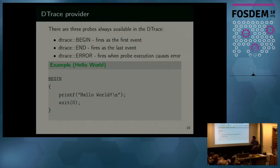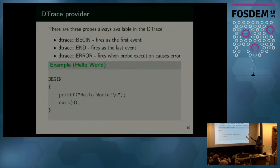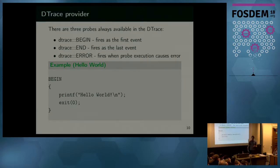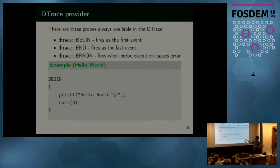Now basically we've gone through the language description. If you try any new language the goal is to write a hello world. This is a hello world in D-trace. I'm using a D-trace provider — the full probe description is provider D-trace, no module, no function, just begin and end probes. The begin probe fires always first, and end is always last before we terminate tracing. The error probe fires only when an action block causes some error — for example, if you touch memory and cause a page fault, D-trace will silently ignore it and replace it with value zero, but it will fire the error probe.